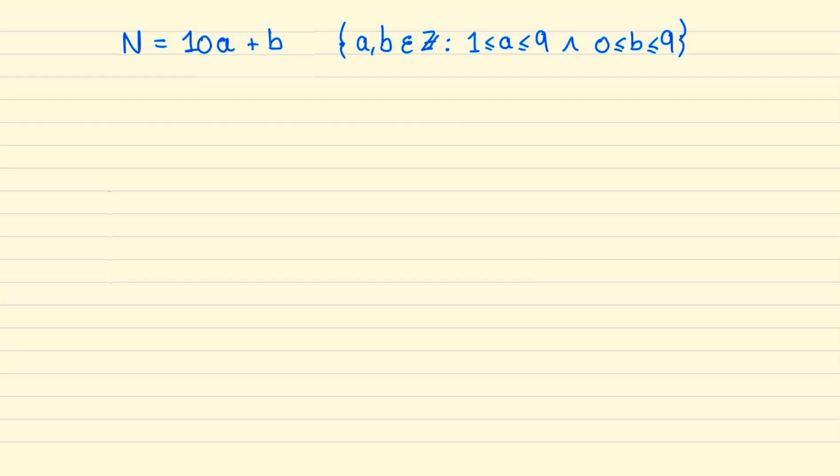And so following the instruction from the question we're given that 10a plus b over a plus b lies between 2.6 and 2.7.